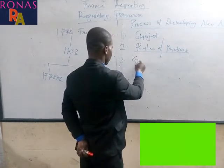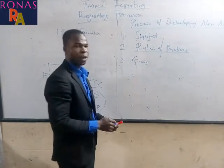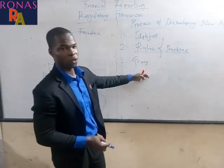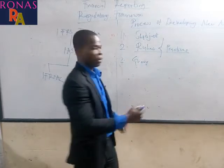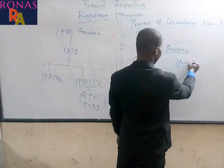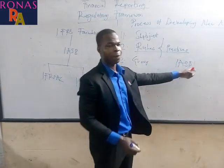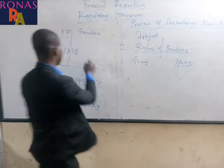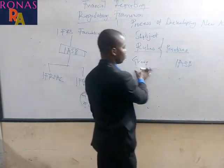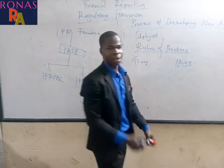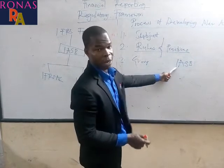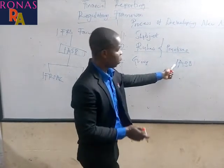The third step is that they form an advisory group. The purpose of this advisory group is to advise the IASB, because the board is responsible for establishing the new standard. So an advisory group is formed to advise the International Accounting Standard Board.